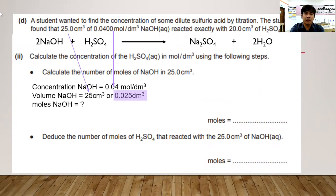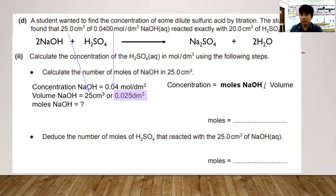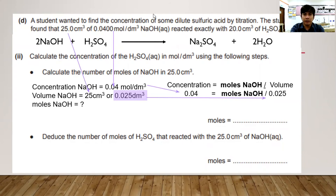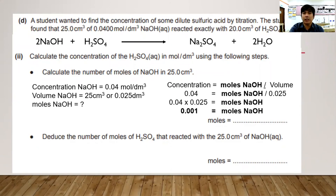Using concentration = moles / volume: 0.04 = moles NaOH / 0.025. Therefore, moles of NaOH = 0.04 × 0.025 = 0.001 mol.